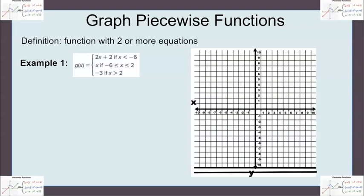A piecewise function is just a function with two or more equations involved. So here in our example we have g of x equaling 2x plus 2 if x is less than negative 6.